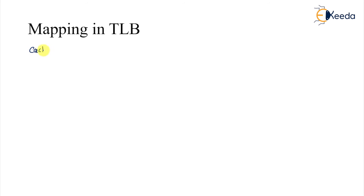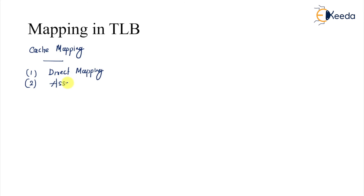The next question here is how the TLBs are being mapped. If you have an idea about cache mapping, cache mapping has three ways of mapping: direct mapping, associative mapping, and set associative mapping.